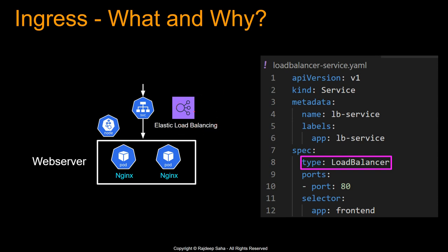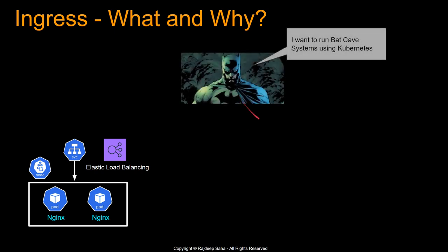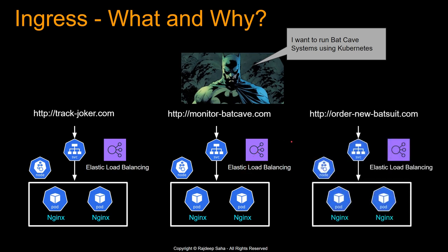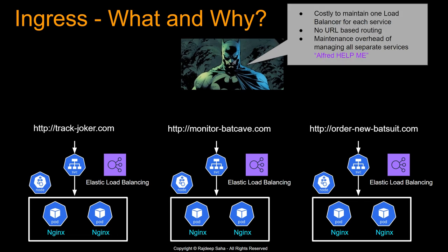This load balancer will have a DNS address, so you can use that to reach the web server. But let's say you have a client who wants to run his whole systems using Kubernetes. For each subdomain — like track joker or monitor bat cave — you have to replicate the setup and deploy another load balancer with another service. In real enterprises there are a lot of subdomains, and if you spin up one load balancer per service, you end up having to spin up multiple load balancers — it's costly to maintain.